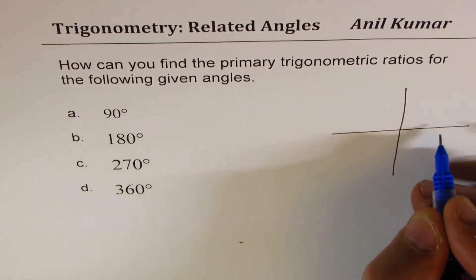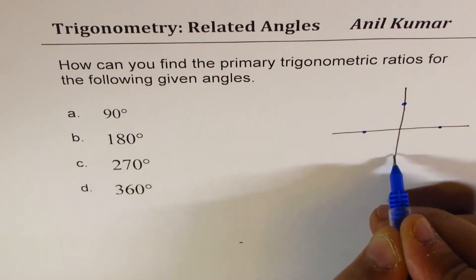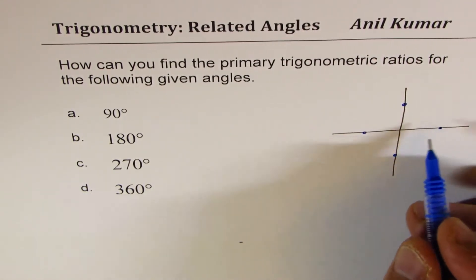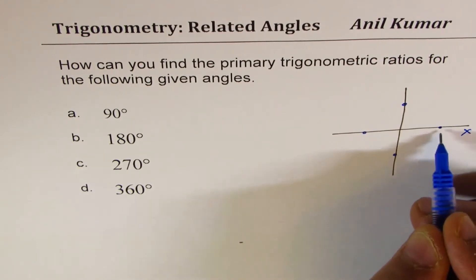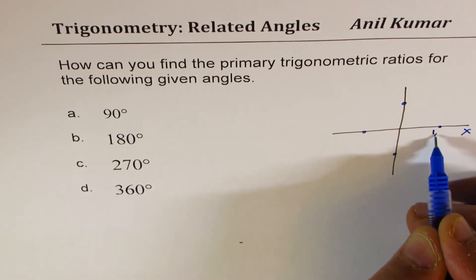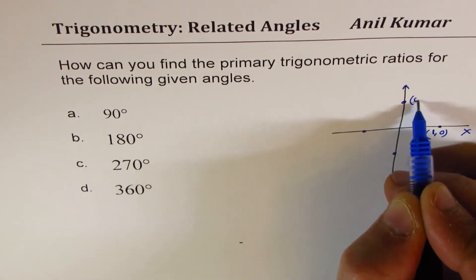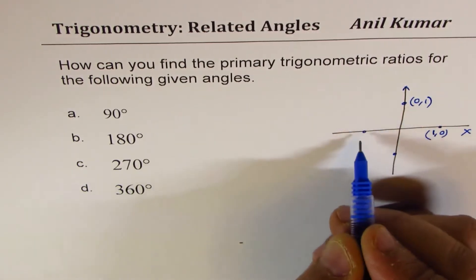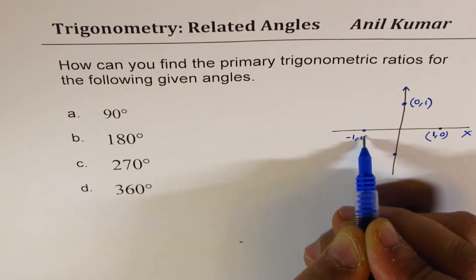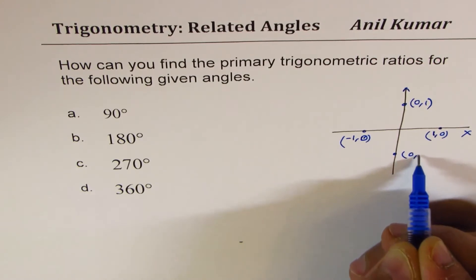Let's consider a few points on the Cartesian plane which are one unit away. On the x-axis, one unit away, it will be (1, 0). On the y-axis, this point will be (0, 1). On the negative x-axis it will be (-1, 0), and here it will be (0, -1).